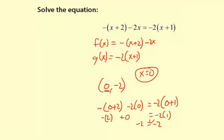So the process, once again, make f of x the left side of the equation, g of x the right side. Go ahead and graph it. And the x-coordinate of the intersection is your solution to the equation.